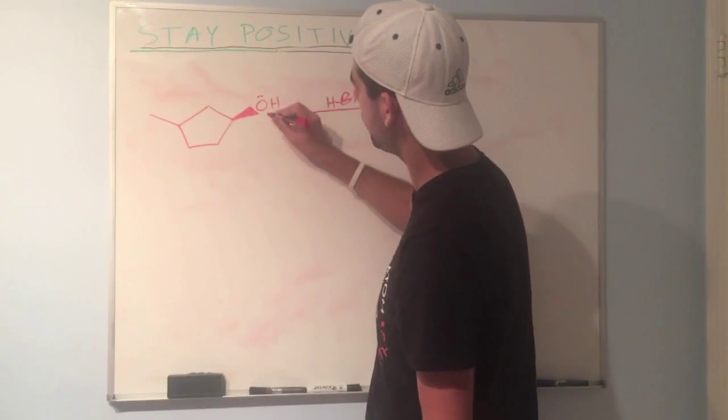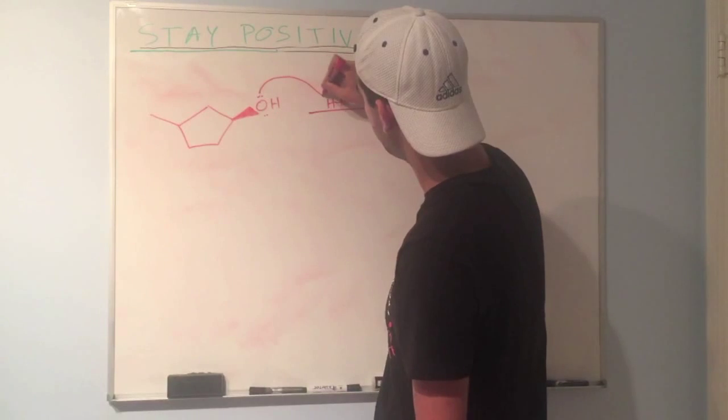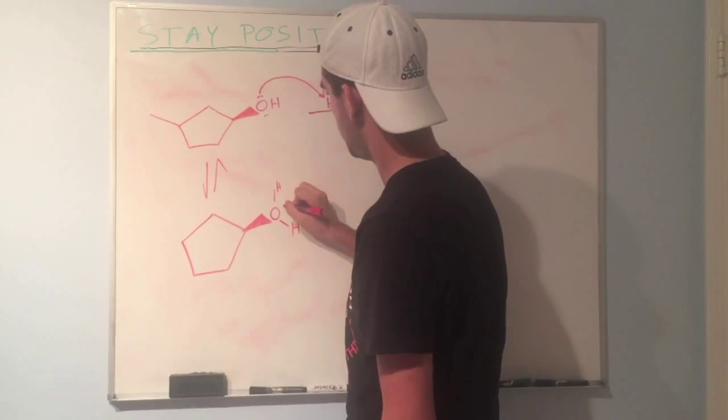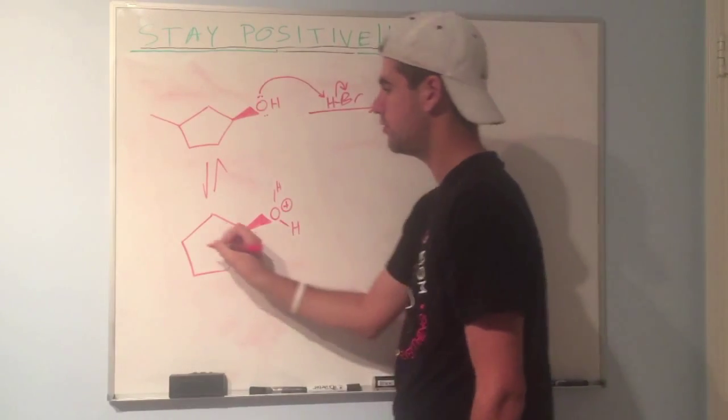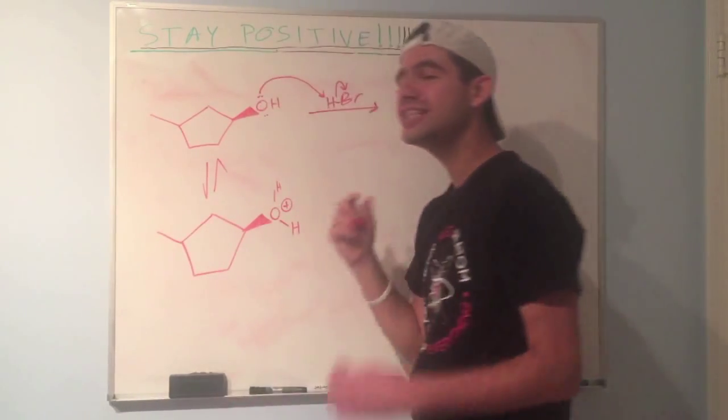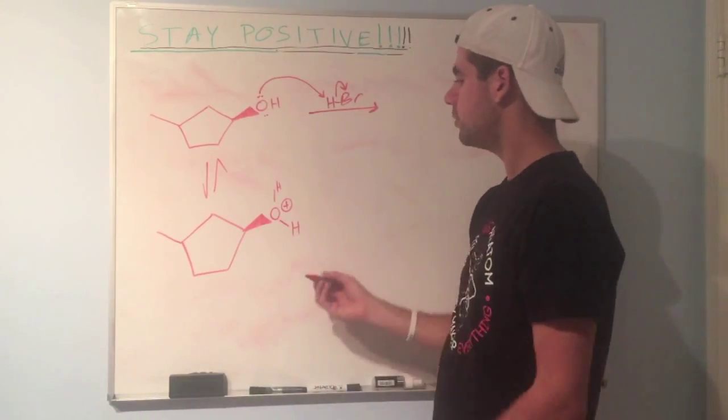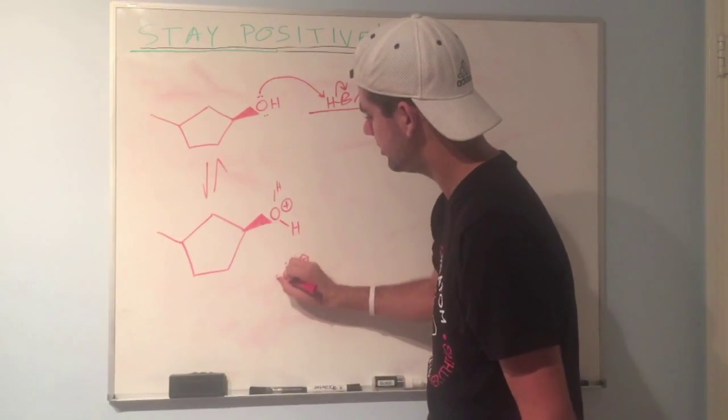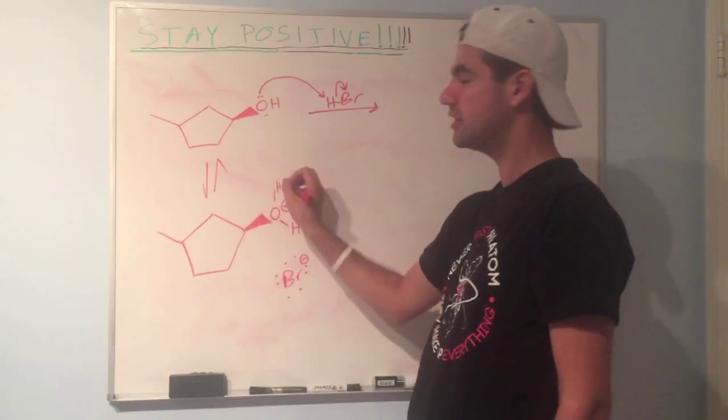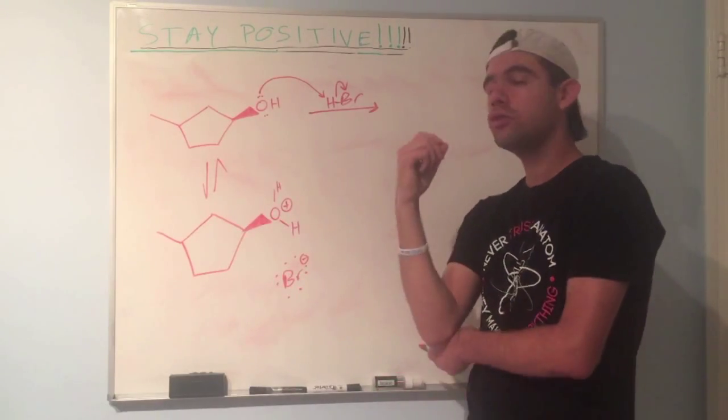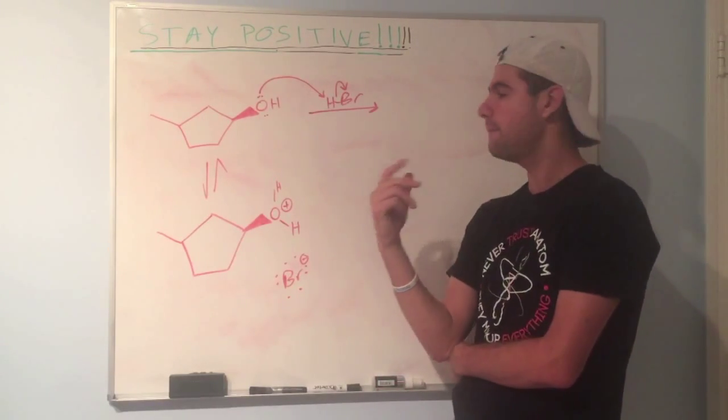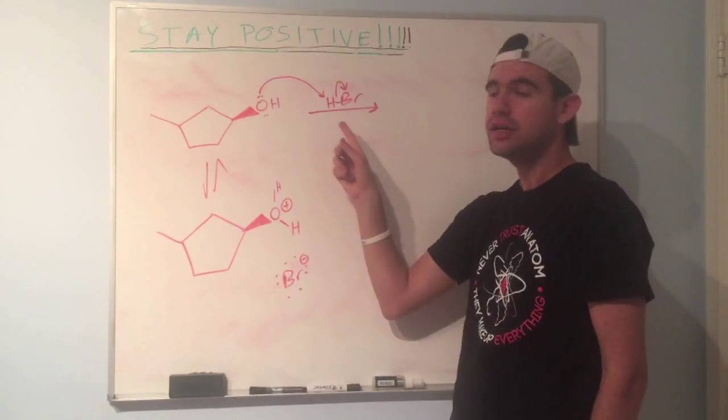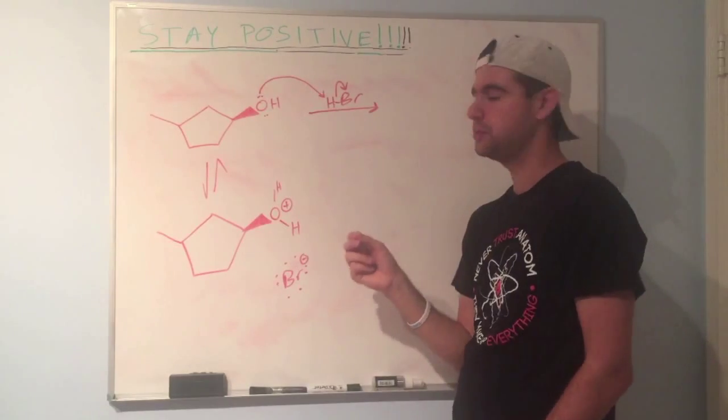So what's going to happen? OH will deprotonate that HBr. Oxygen will grab this hydrogen, send those electrons over to bromine. Oxygen with three bonds, plus one formal charge. Now here's the key to this problem. Most people will say, okay, now we have Br minus floating in solution. Let's just attack the electrophilic site and kick this guy off.